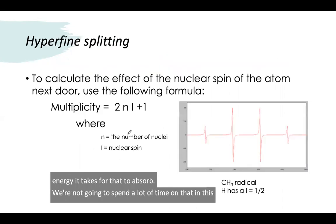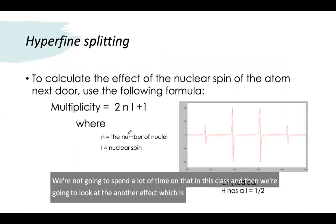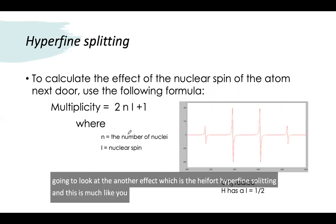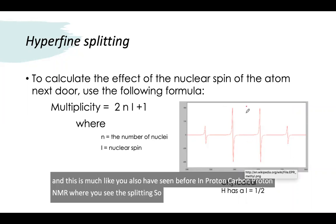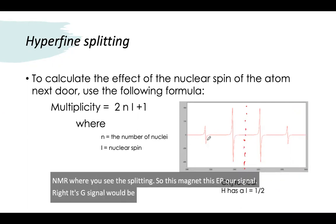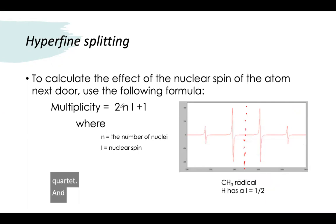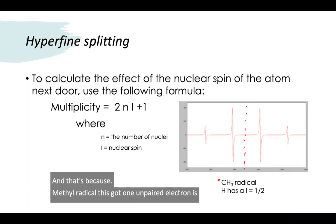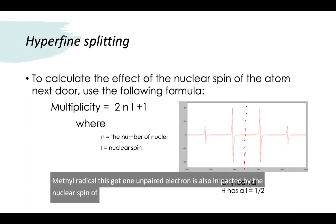And then we're going to look at another effect which is the hyperfine splitting. This is much like you've seen before in proton NMR where you see the splitting. This EPR signal, its g signal would be somewhere in here but it's showing up as a quartet. That's because the methyl radical, which has one unpaired electron, is also impacted by the nuclear spin of the atoms next door.